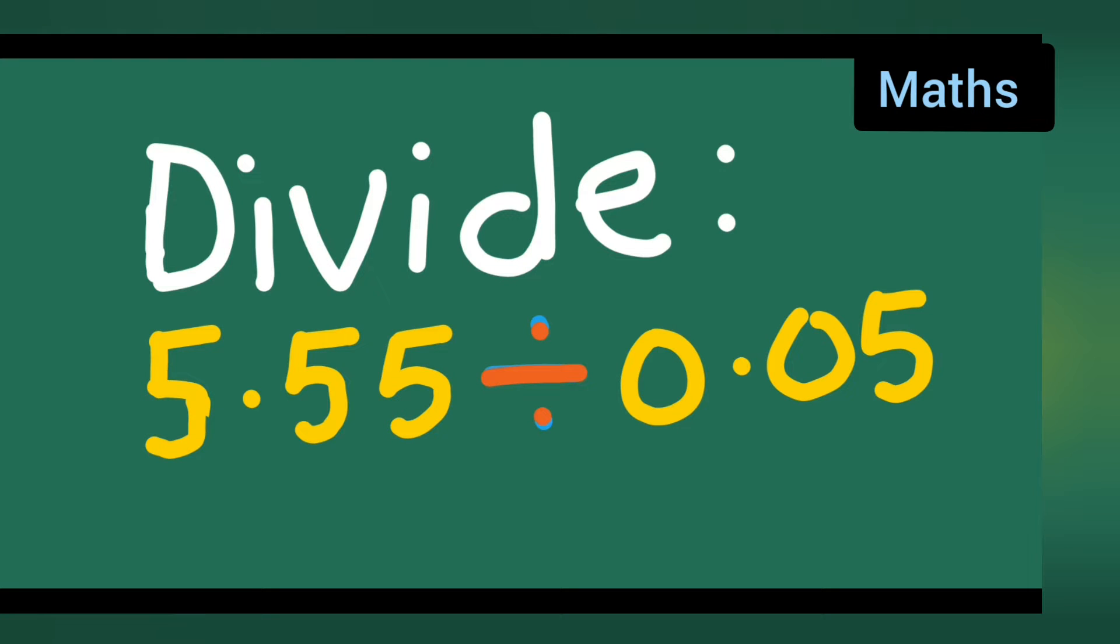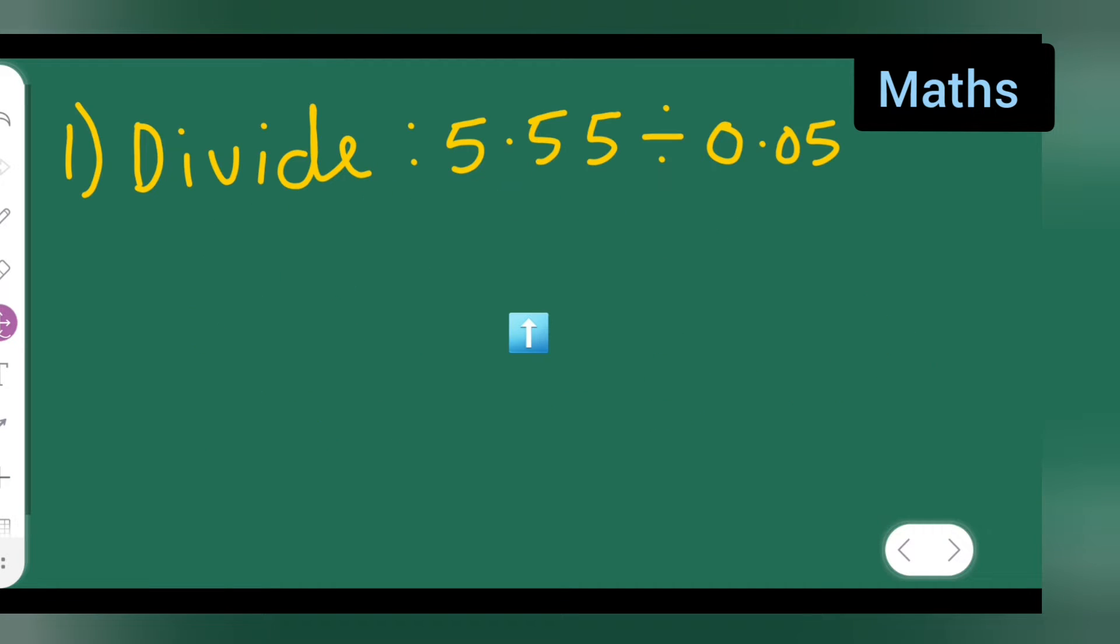Welcome to today's class of mathematics. Today's question: let us see how to divide 5.55 divided by 0.05. We need to see how to divide these numbers. So first you can write down 5.55 divide by 0.05.